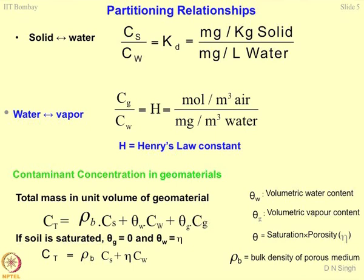There is a boundary condition: if the soil is saturated, your theta_g equals zero, where theta_g is the volumetric gas or vapor content. Volumetric moisture content is defined as saturation multiplied by porosity — the bulk porosity. This is the modern approach; we no longer talk about gravimetric moisture, we talk about volumetric moisture. So saturation multiplied by porosity gives you the theta value. If saturation is 1, fully saturated soil, theta is nothing but equal to porosity.